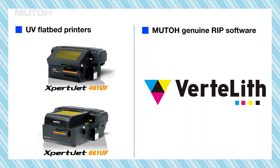Hi everyone. These are the ExpertJet 461UF and ExpertJet 661UF MUTO UV-InkJet Printers. The UV printer performance can be optimized by using the convenient functions of MUTO genuine RIP software. In this chapter, we would like to introduce automatic generation of spot colors.